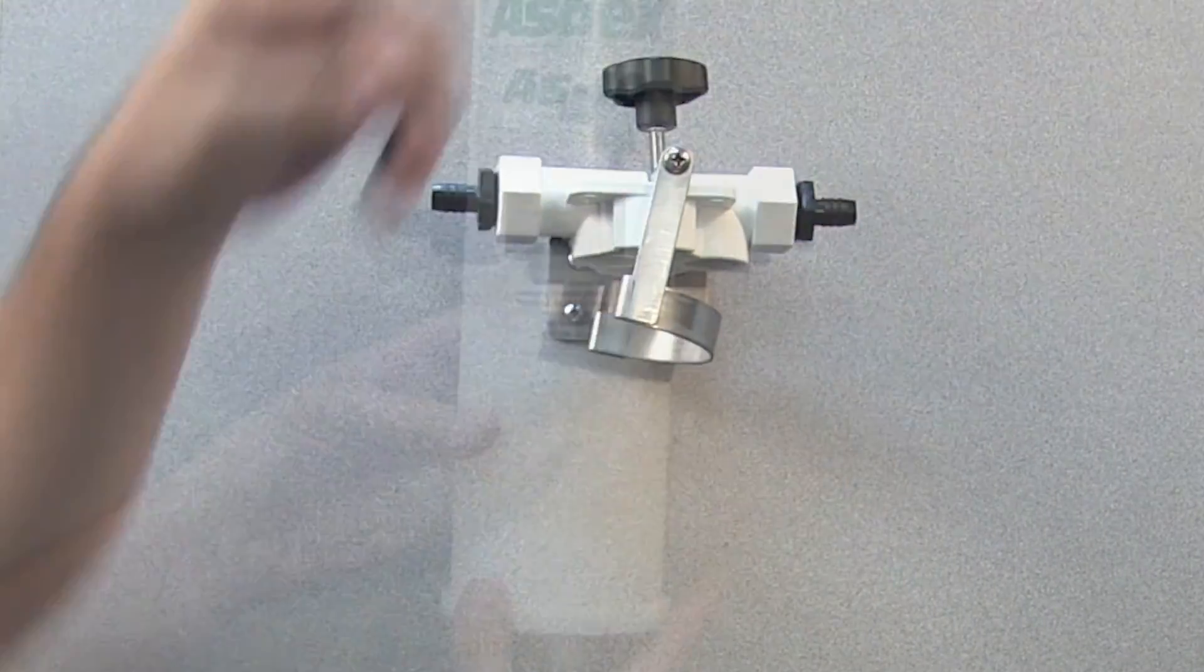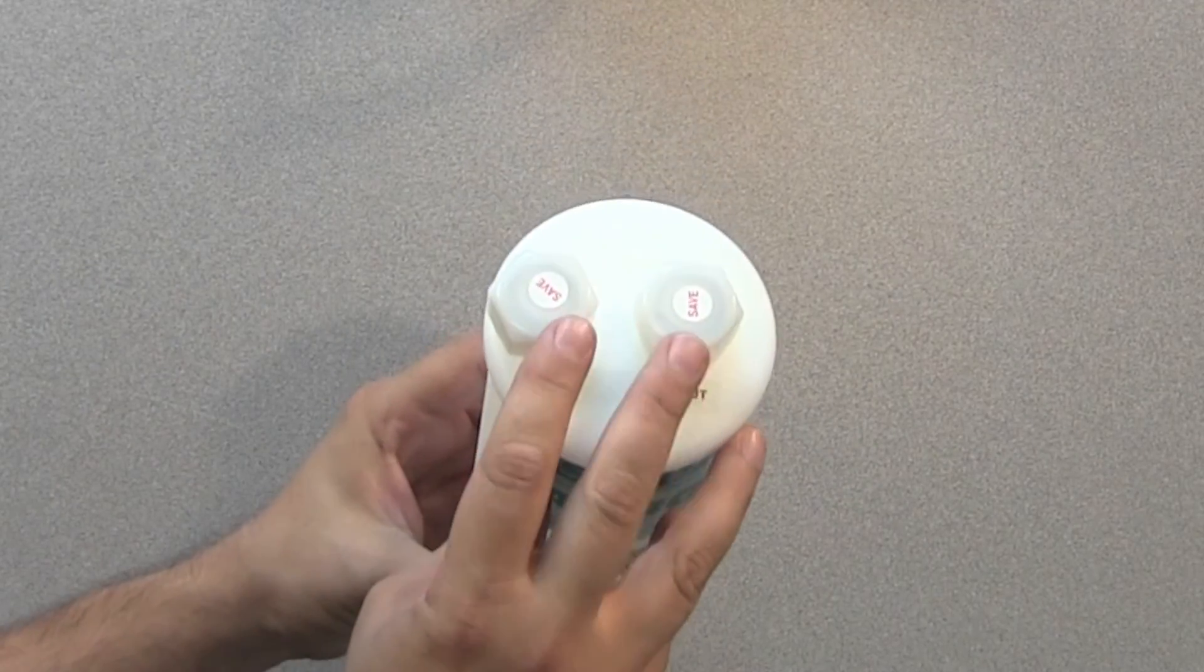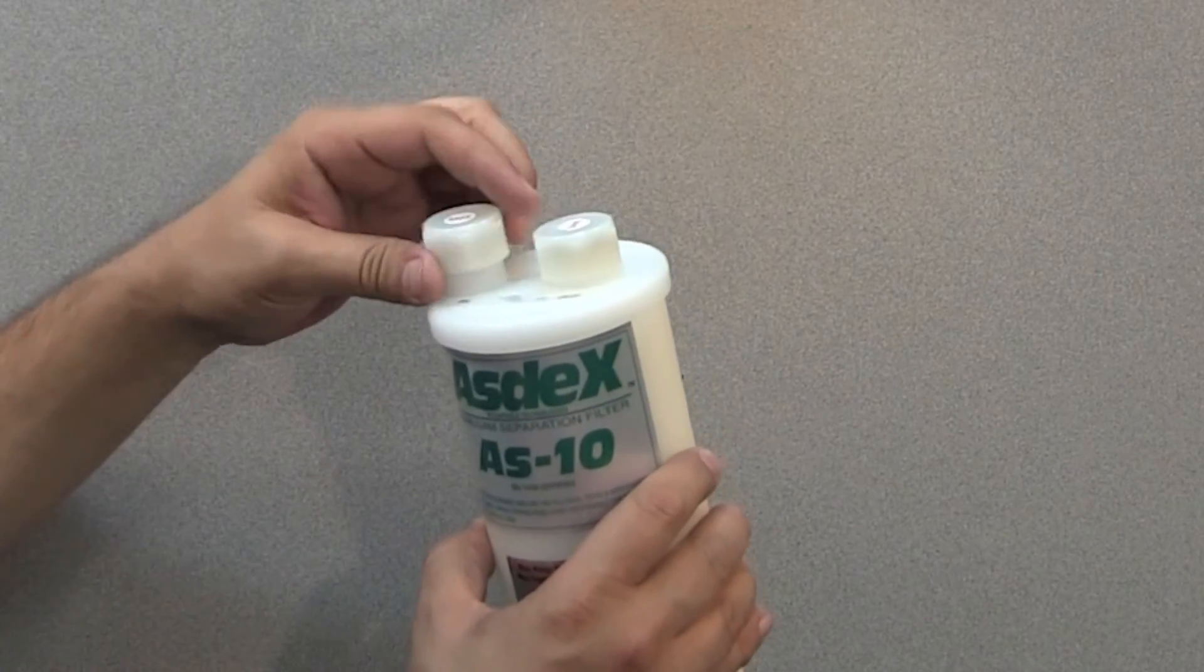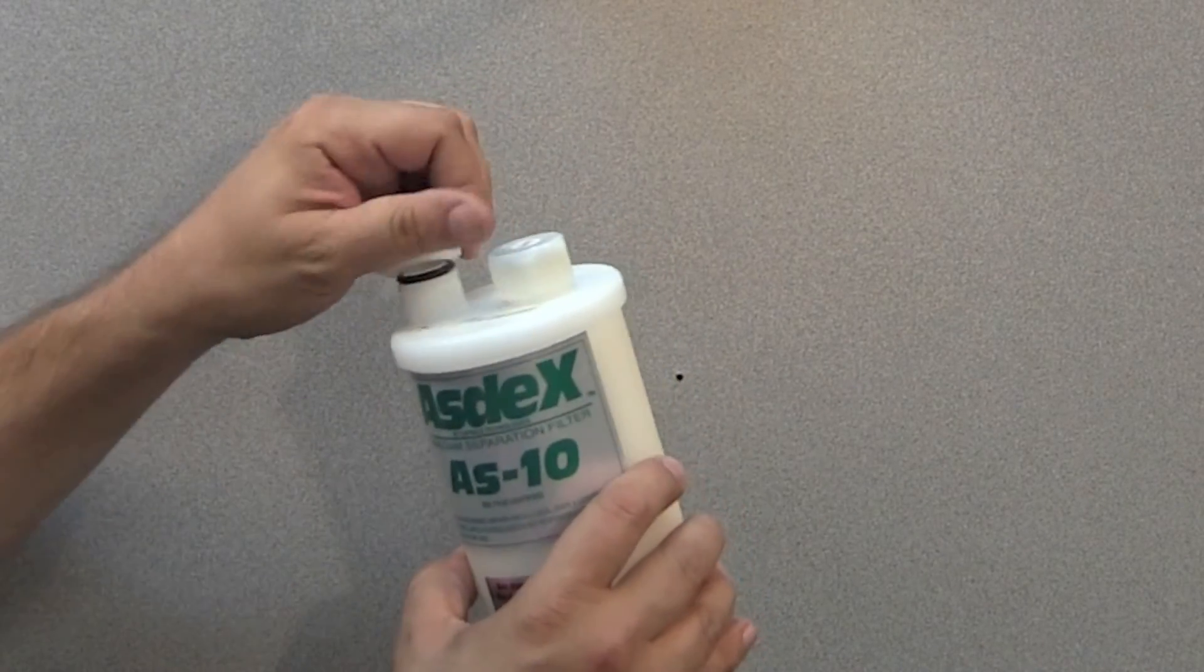Now, grab the separation filter and remove the inlet and outlet screw on caps. Keep the caps in a safe spot as you'll need them to dispose of the filter.